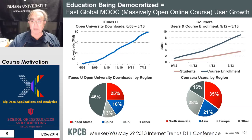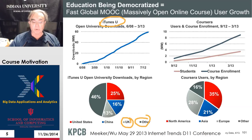Here we have some other statistics — iTunes and the Open University in the UK — showing how content is downloaded by different regions. The Open University has quite broad country coverage, with the UK being high because that's its host, but also China and the US being major users of the Open University.